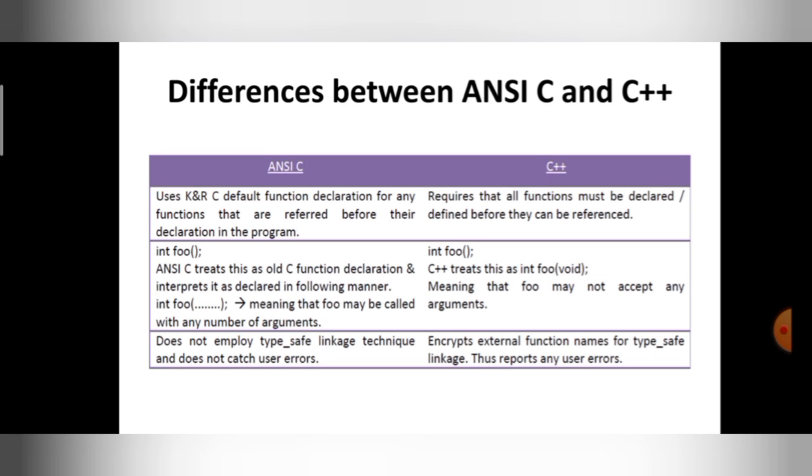In K&R C, functions that are referred can be referred before their declaration in the program. If you want to refer any function, that function can be referred before their declaration in the program. But in C++, it requires all functions must be declared or defined before they can be referenced. This is the first difference.